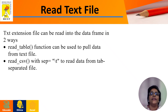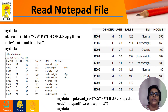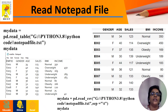Next comes reading a text file. Text files can be read into the DataFrame in two methods: either using the read_table function or using read_csv with separator as \t. If I want to read a notepad file that contains the information employee ID, gender, age, sales, BMI, and income — which is a text file separated by a tab — then I can use the command pd.read_table and specify the location with the file name as notepad_file.txt.